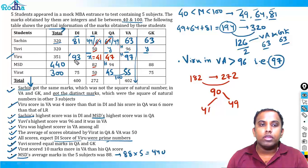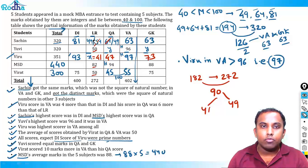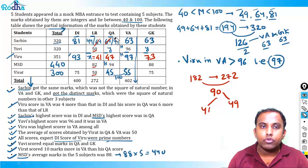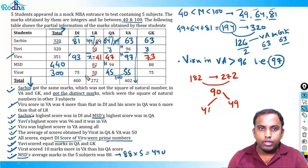Viru's total: 93 + 41 + 47 + 97 = 278, and the column total is 351, so Viru's GK = 73. Since Sachin's LR = 49, his QA must be 64. Sachin's row is now completely filled, and so is Viru's.